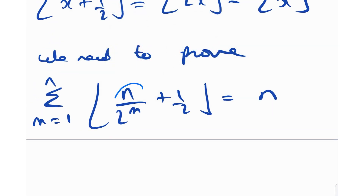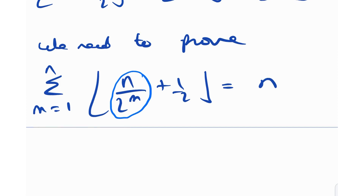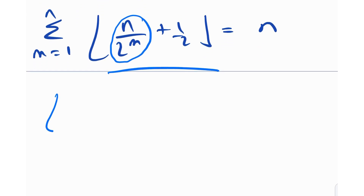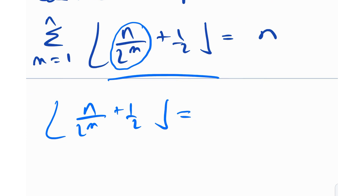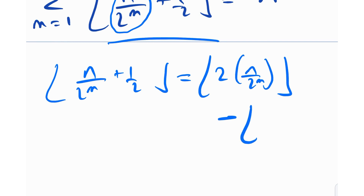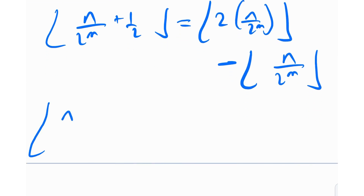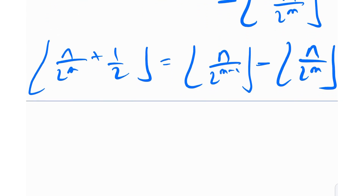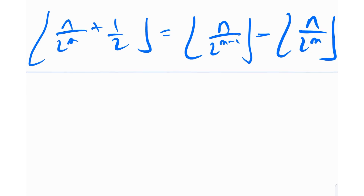Each term floor(n/2^m + 1/2) is just floor of some x plus one half, and using our identity it equals floor(2 · n/2^m) − floor(n/2^m) = floor(n/2^(m−1)) − floor(n/2^m). So effectively I'm going to replace each term in the sum with this telescoping difference.